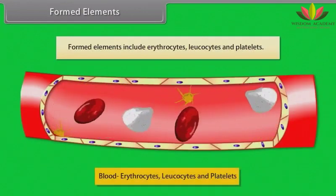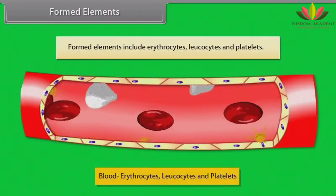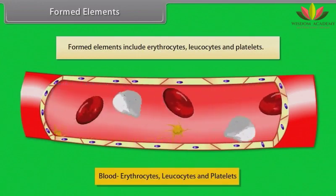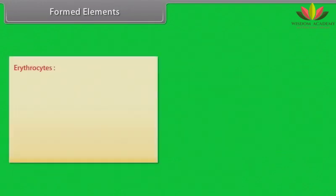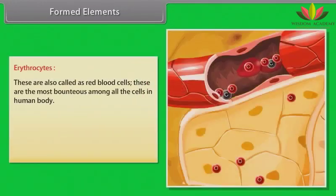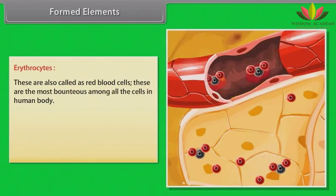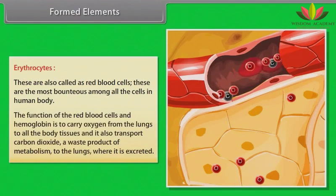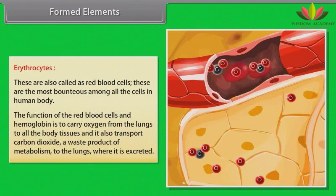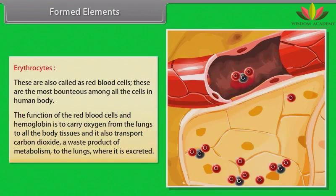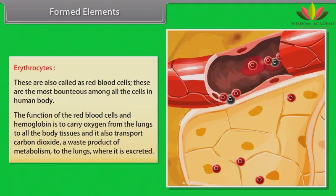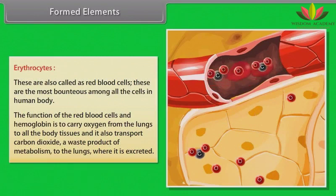Formed elements include erythrocytes, leukocytes, and platelets. Erythrocytes, also called red blood cells, are the most abundant among all cells in the human body. The function of red blood cells and hemoglobin is to carry oxygen from the lungs to all body tissues, and to transport carbon dioxide — a waste product of metabolism — to the lungs, where it is excreted.